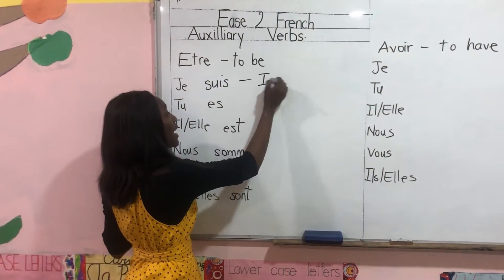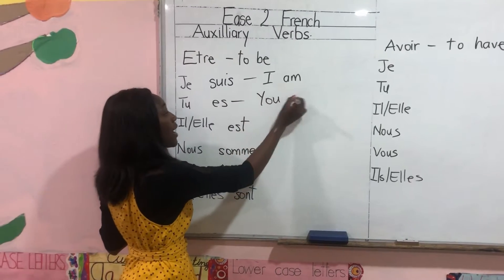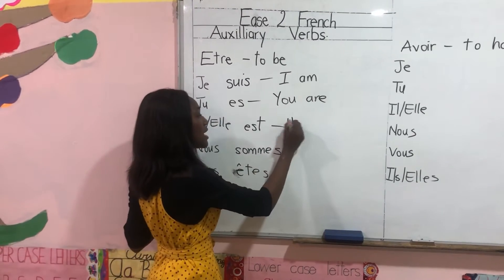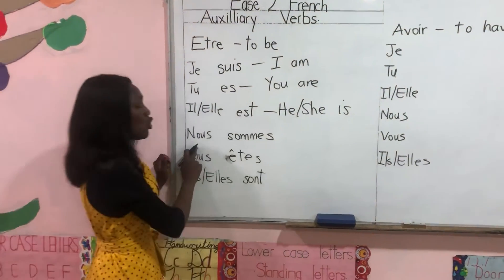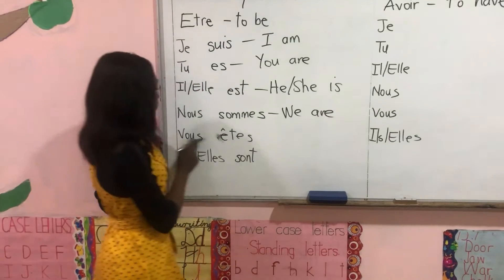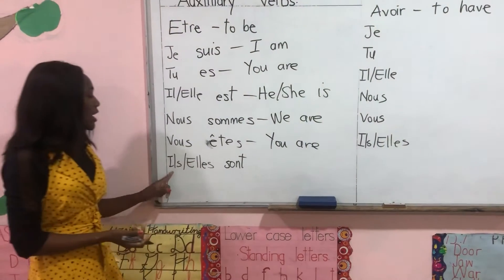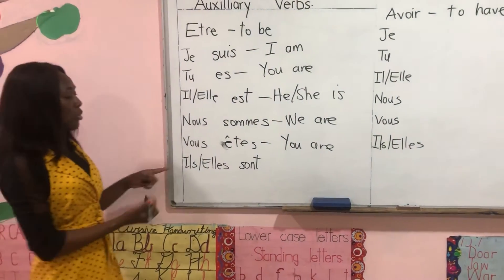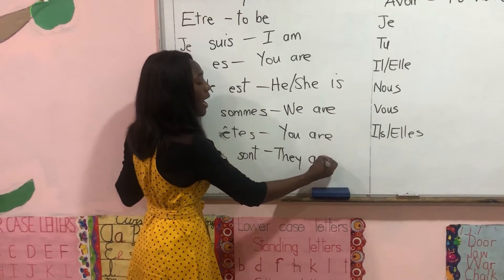Je suis — I am. Tu es — you are. Il, elle est — he, she is. Nous sommes — we are. Vous êtes — you are. Ils, elles sont — this is the plural. So they are.